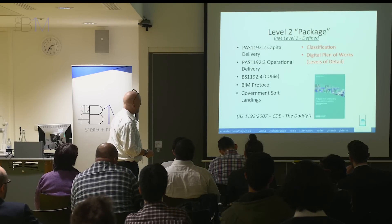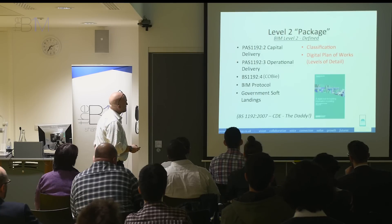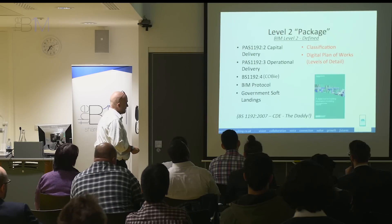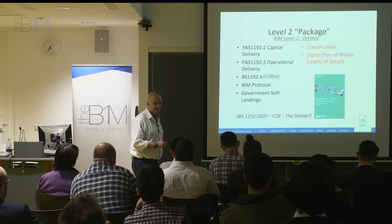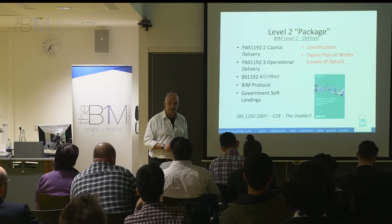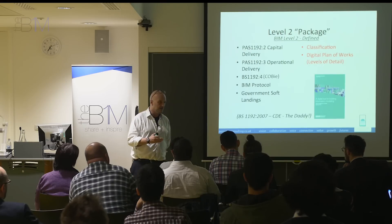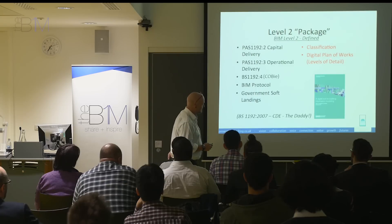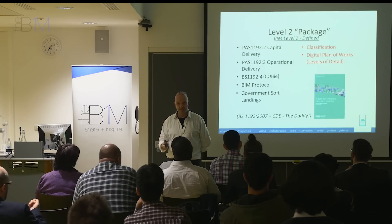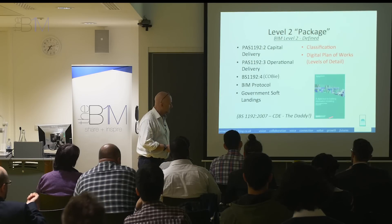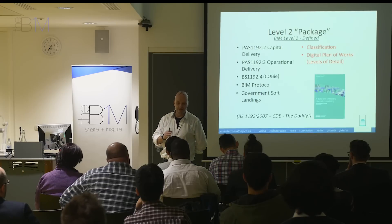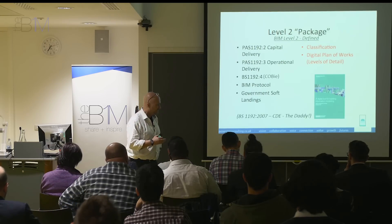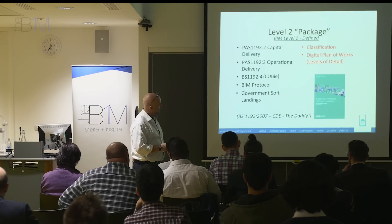So this is the Level 2 package looked at a different way. The two items in red are still a work in progress. There is something called UniClass 2, which is a classification system, but it's not complete. And there is some work on the digital plan of work available on the BIM Task Group website, but that's only taken to a certain level. There's been a competition through the Technology Strategy Board — now known as Innovate UK — and RRBA Enterprises are leading a consortium developing digital tools which will produce the classification and the DPOW sometime next year.